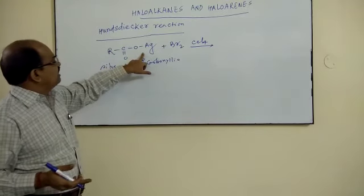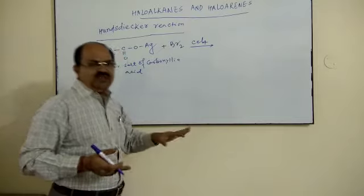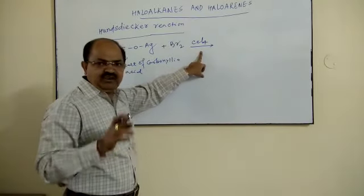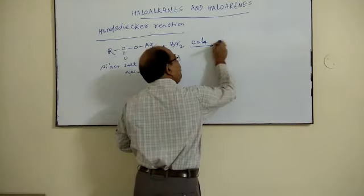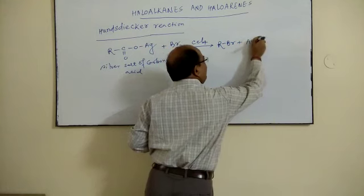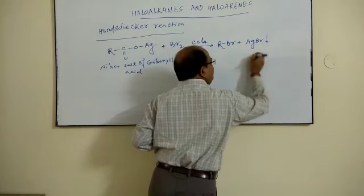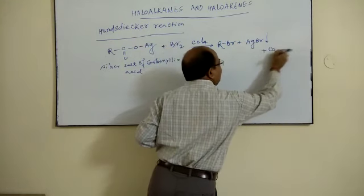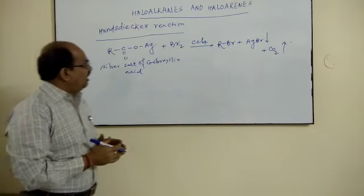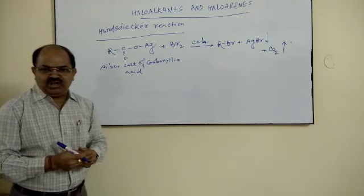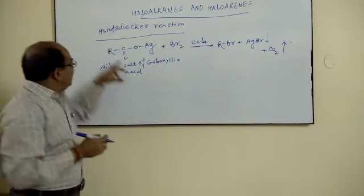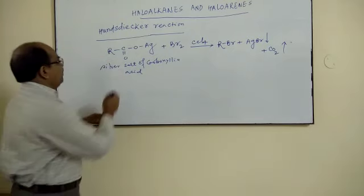When silver salt of carboxylic acid refluxes with bromine or reacts with bromine in carbon tetrachloride, then bromo-alkane is formed - that is your RBr plus your AgBr will precipitate out and this will release carbon dioxide gas. Now let us see, if you observe the reaction, this reaction is particularly used to reduce the number of carbons. For example,